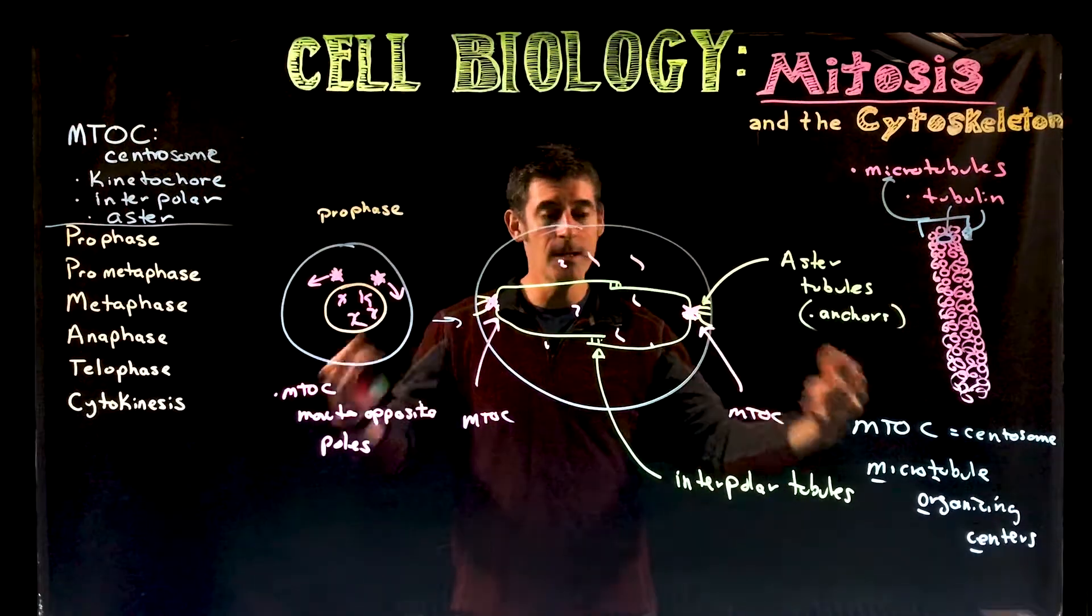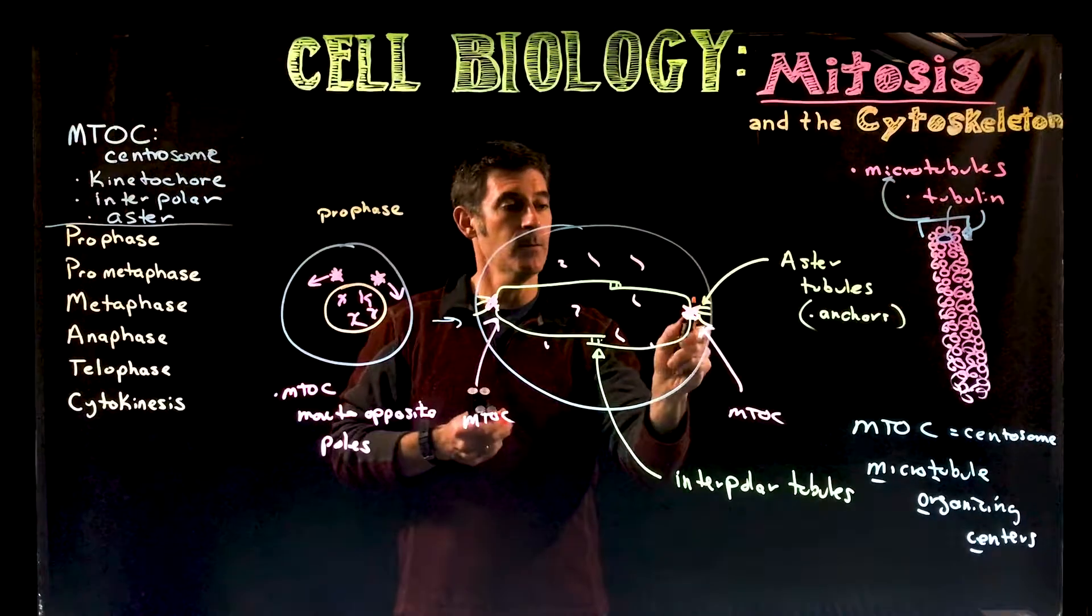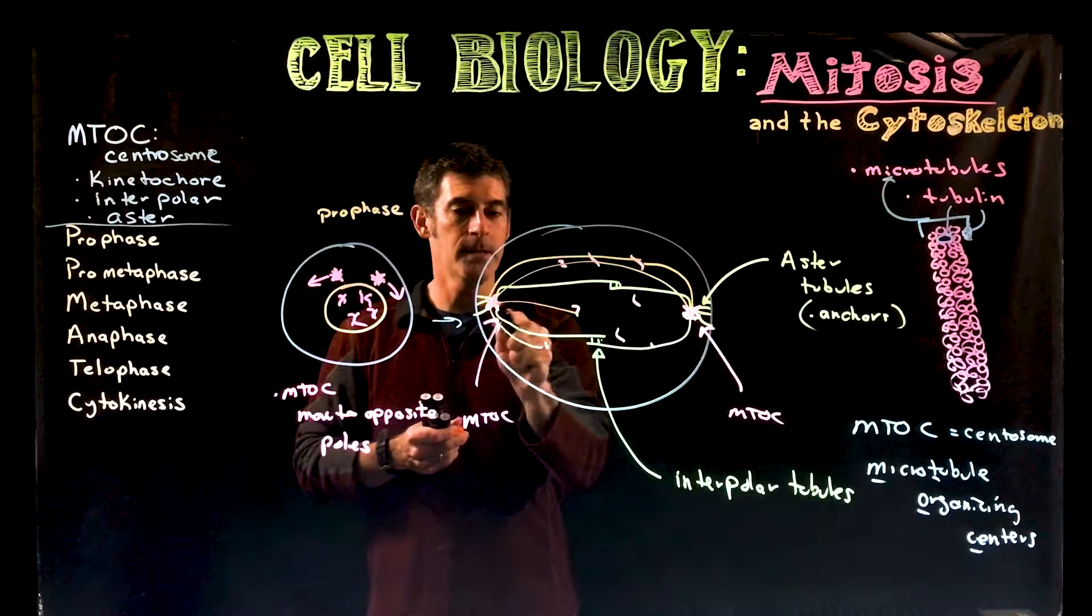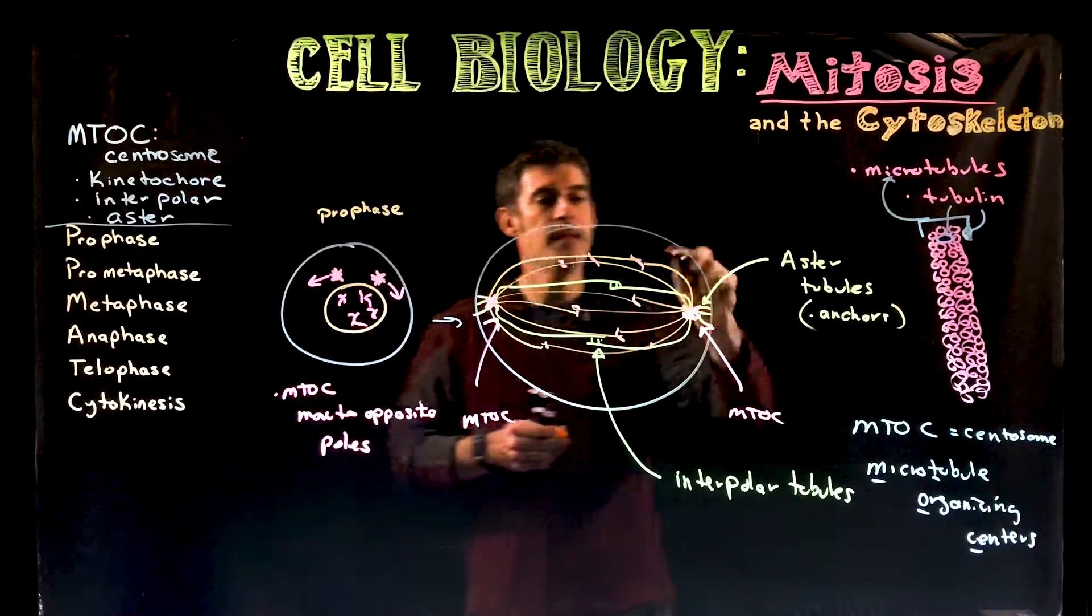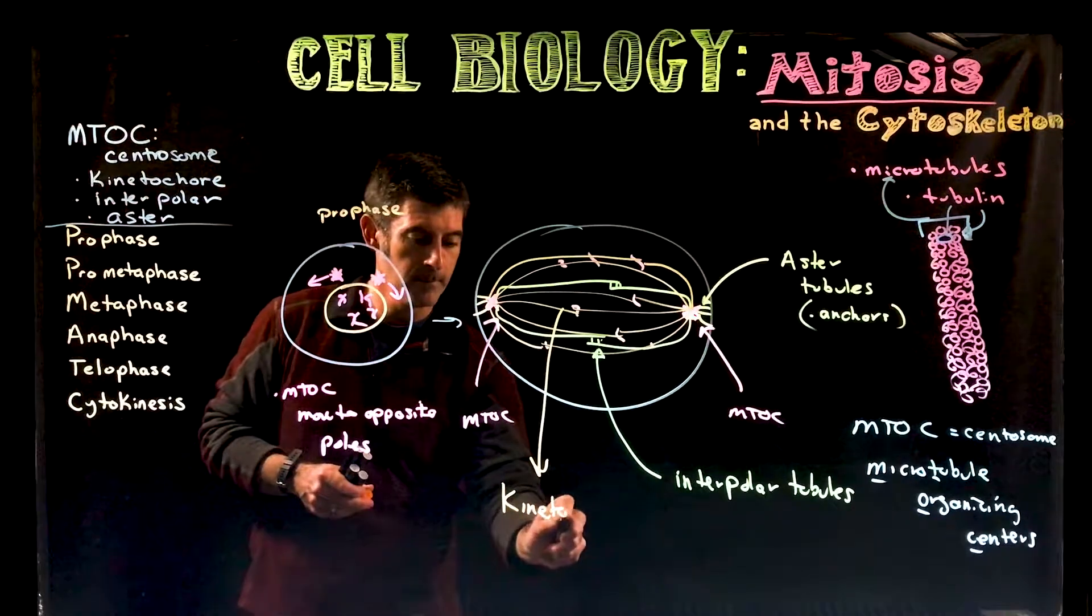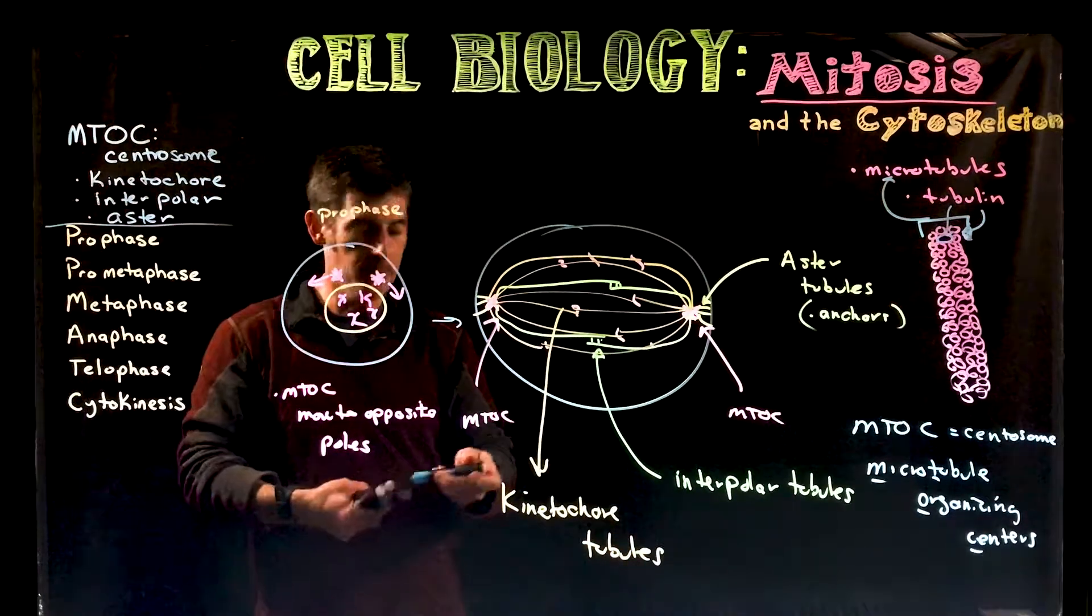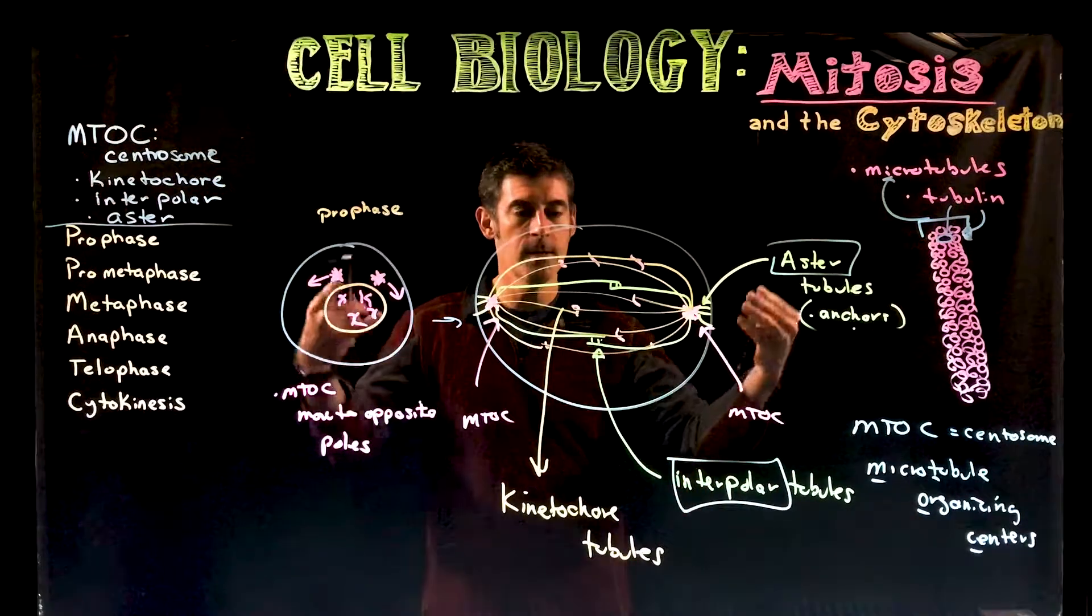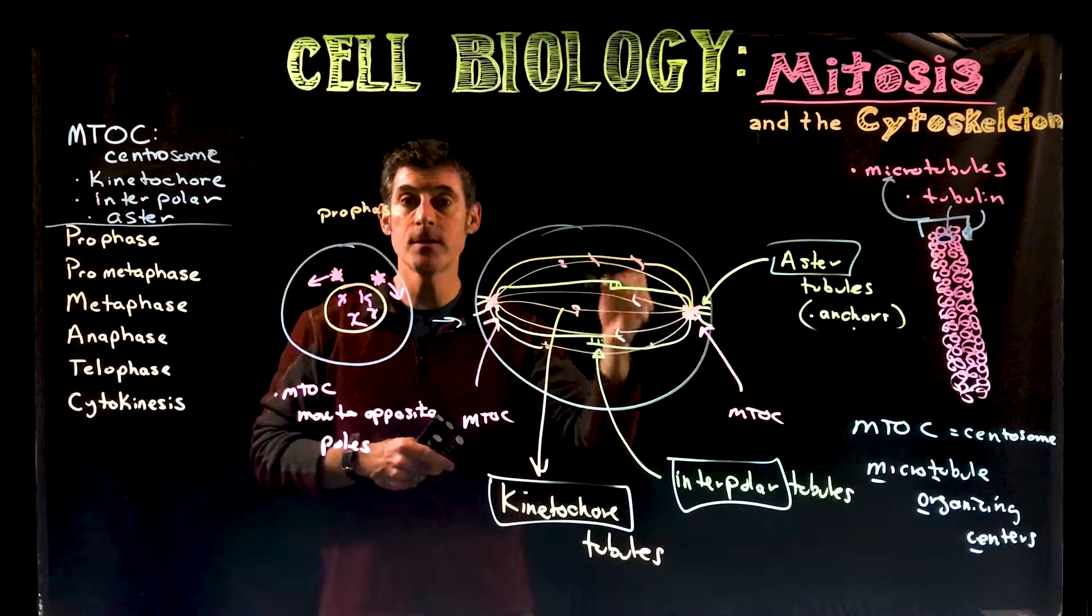So here we're just kind of introducing, again, terms and their definitions and the overall process. So astrotubules anchor the MTOCs, interpolar tubules connect and they stretch out. And what they're doing is they're kind of stretching the cell, kind of pulling the cell apart. And then we have the ones that we're really more focused on here, the ones that actually connect to the chromosome, so the sister chromatids. And we have these from each side of the cell. And these, all these ones connecting to the chromosomes are called kinetochore tubules.